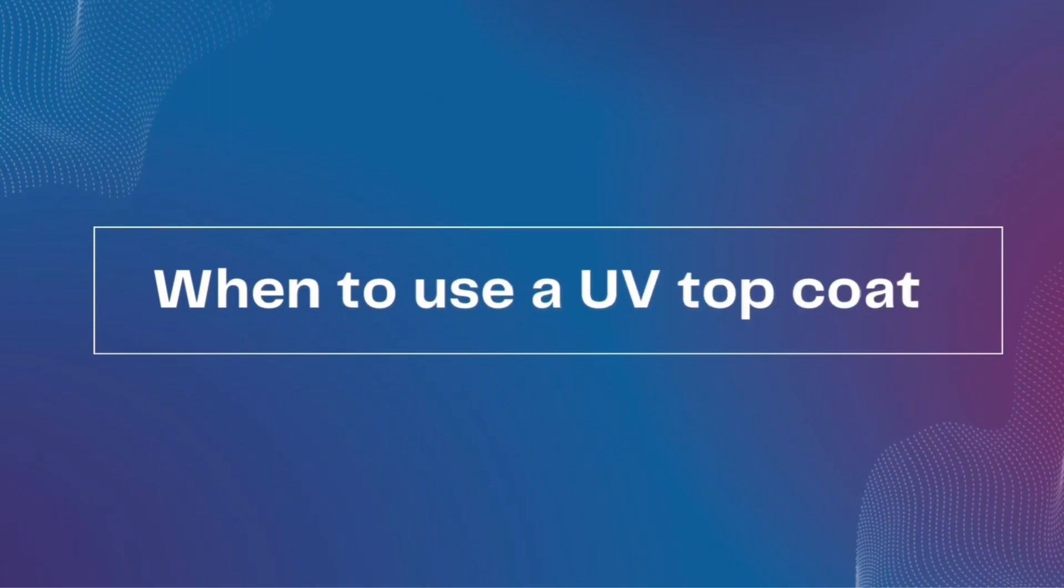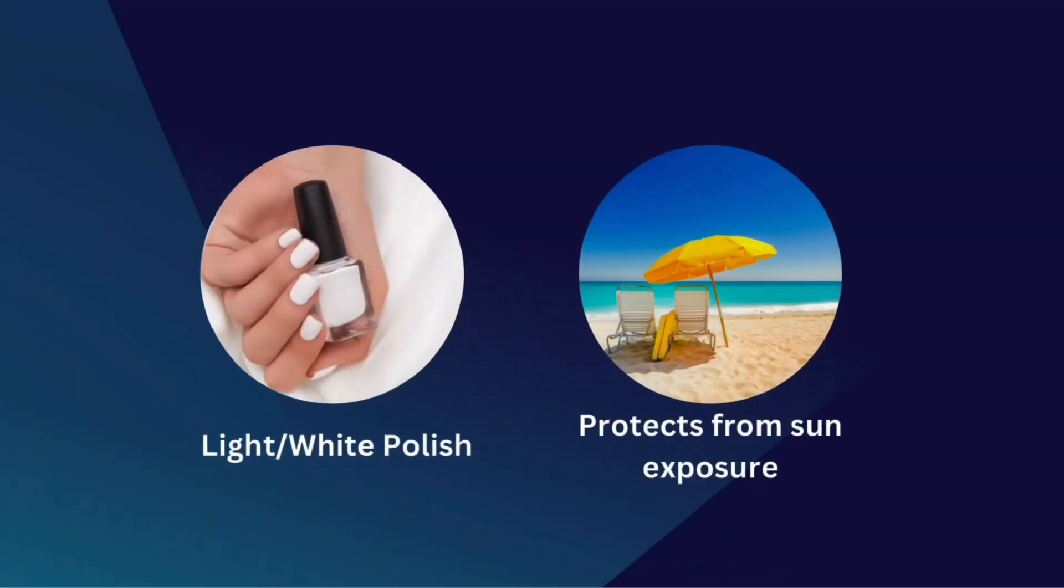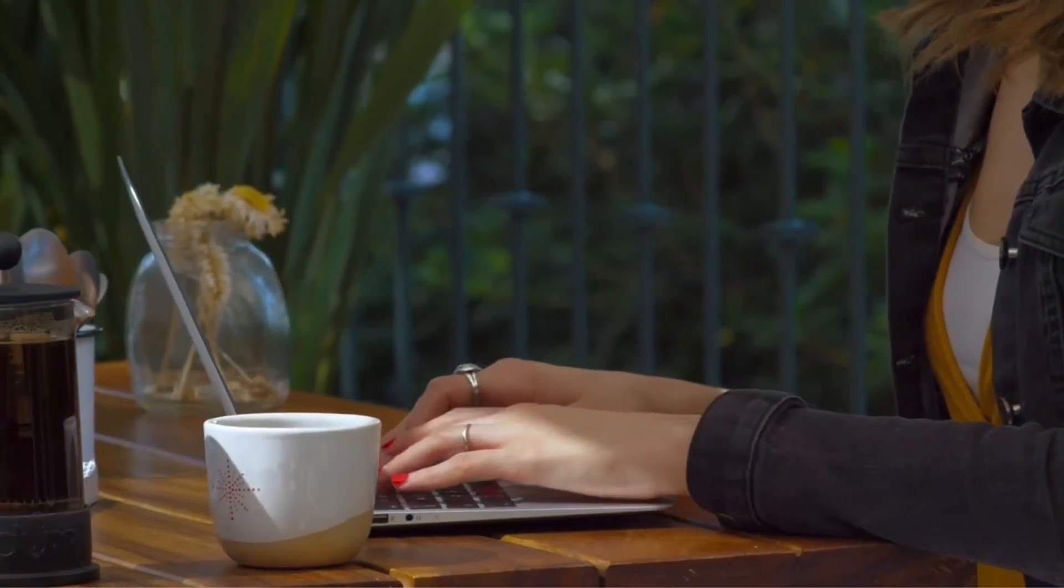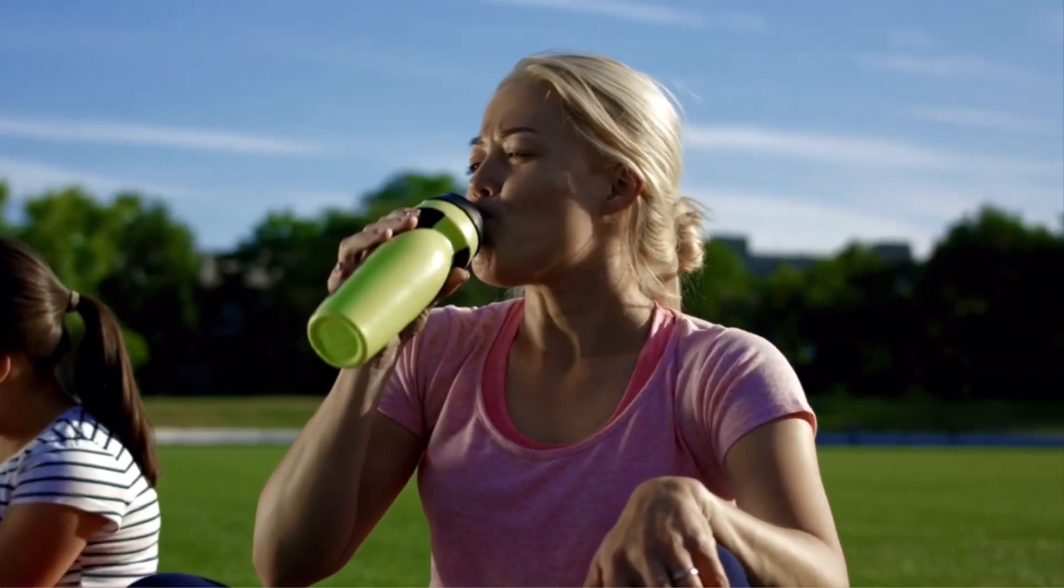So what are the UV top coats even good for? From what I understand, they are meant for light colors and white so that they don't yellow due to overexposure of UV. Let's say that you work outdoors, you're outside a lot, you go to the pool or beach and your polish is getting yellow.